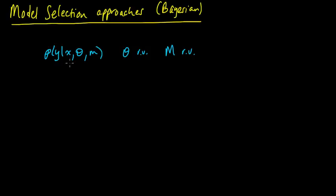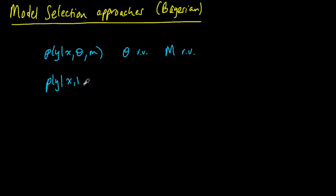So this is a class of models. If we're being Bayesian, we just assume our distributions, our priors, and we just use the rules of probability. That's what being Bayesian is.